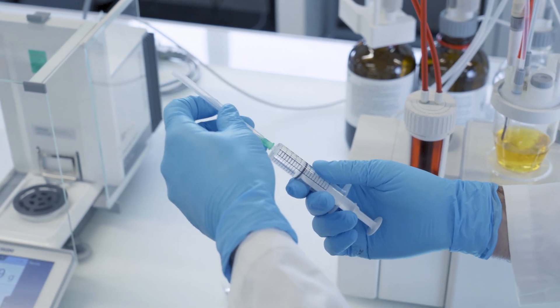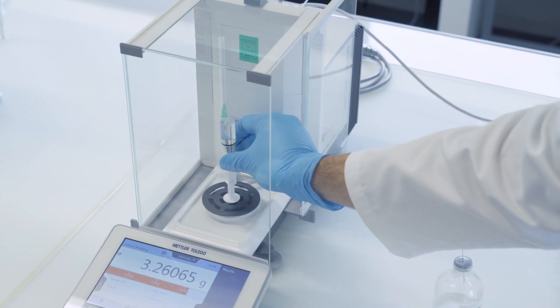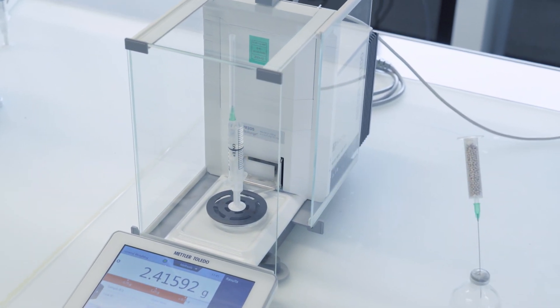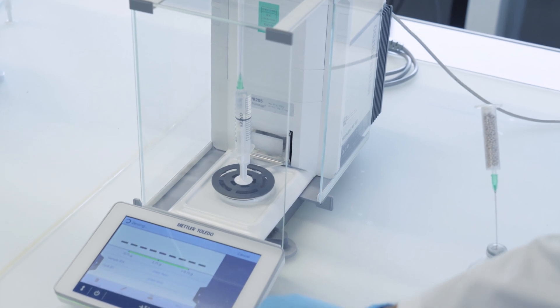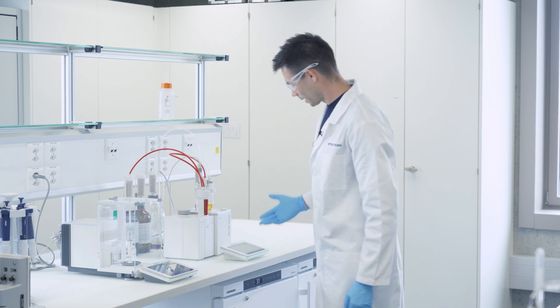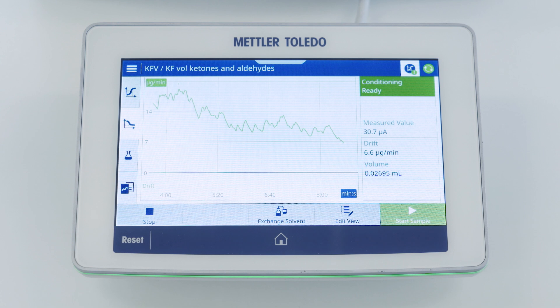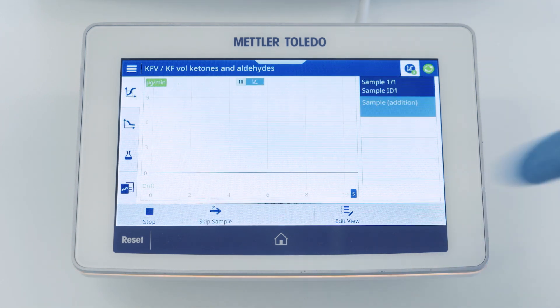Now we can place the needle on the balance and set the balance to zero. After we have zeroed the balance we check if the drift condition is still fulfilled, which is the case, and we can start the sample.